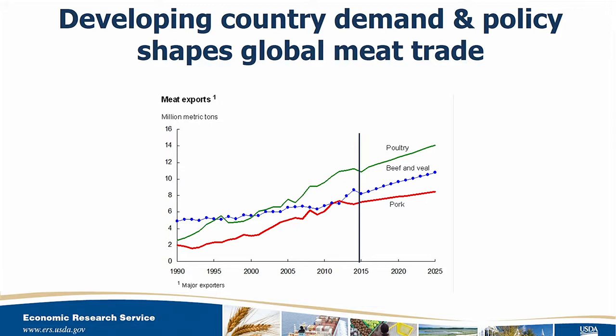This chart shows total exports from the major exporting countries, and you can see that grows over time for all of the different major meat products. What we don't see in this chart is that there are shifts among the exporters. An important trend in global markets is increasing competition from developing countries that are growing as both importers and exporters. For example, in 2014, India became the world's largest beef exporter, and its exports are projected to increase by 30% over the next decade.